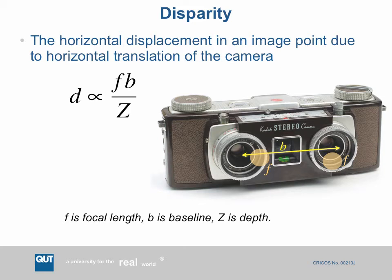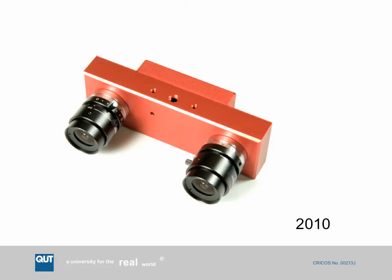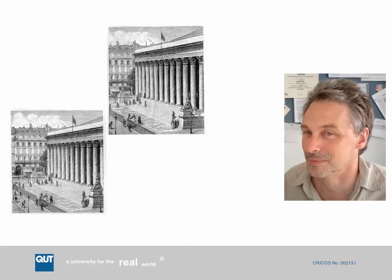With an old stereo viewer you put the little postcard in the slot at the top and look through the two eyepieces, getting quite a vivid perception of distance. Here's one I bought on a trip to Prague — you look through it and get quite a nice three-dimensional view of the bridge. Prague is also important because that's where Karel Čapek lived — he's the guy who coined the term 'robot'.